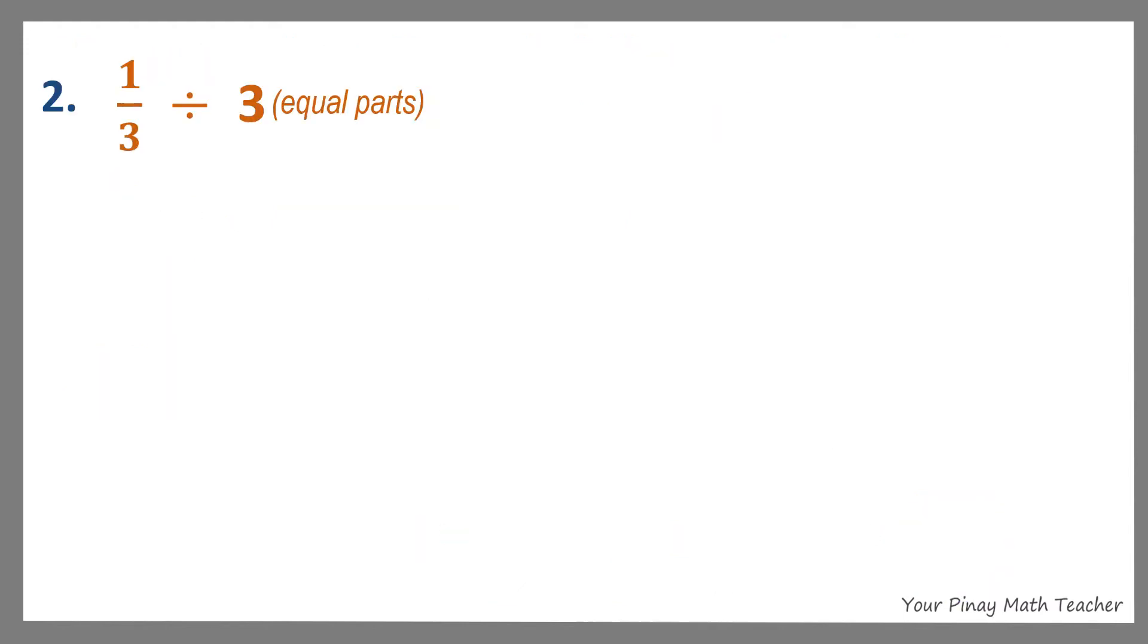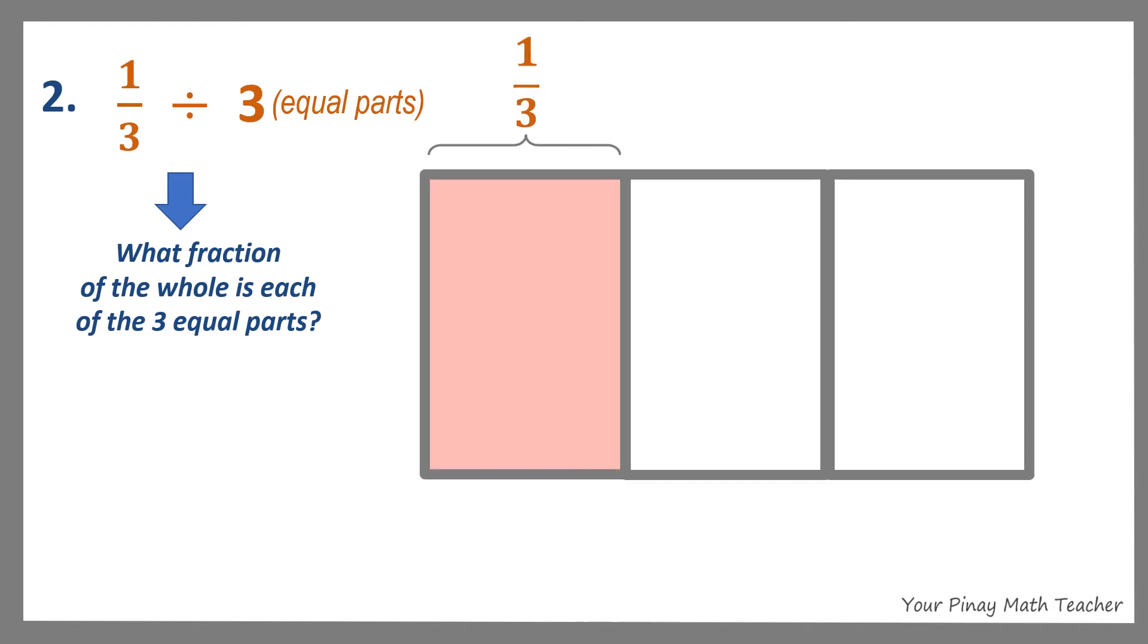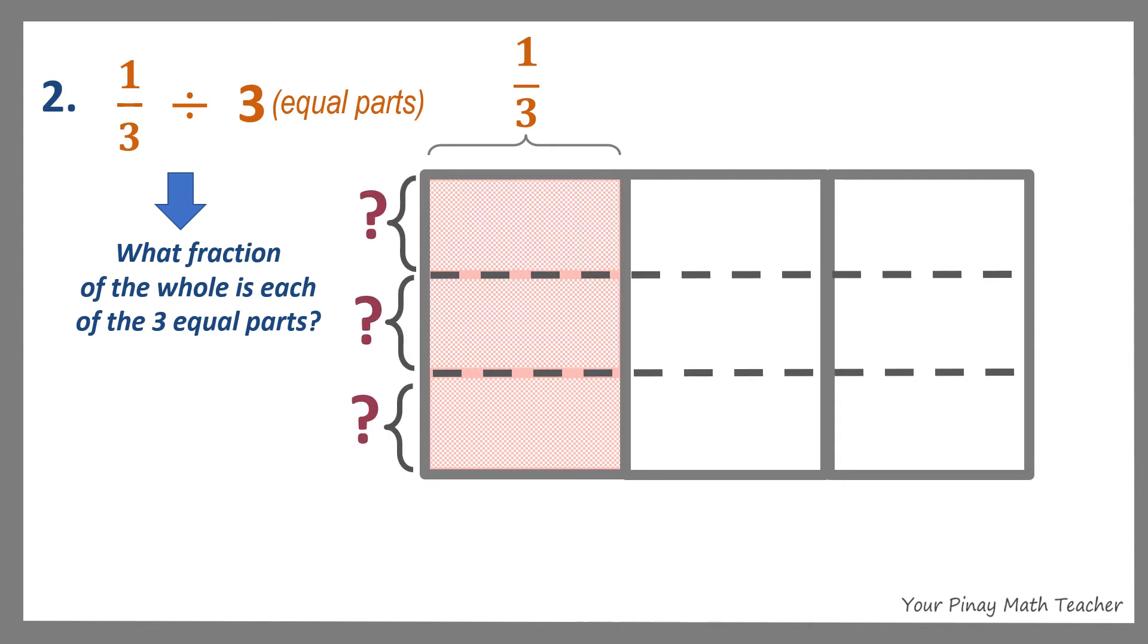Number 2: 1 third divided by 3. This may represent 1 out of 3 slices of cake being divided into 3 equal parts. This also answers the question, what fraction of the whole is each of the 3 equal parts? So we have here the shaded part, which is 1 third, divided into 3 equal parts.